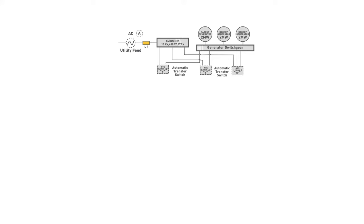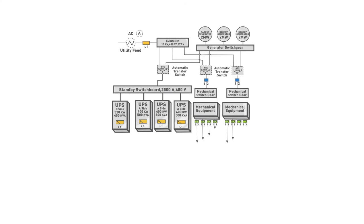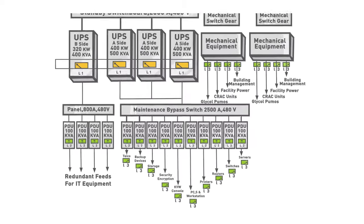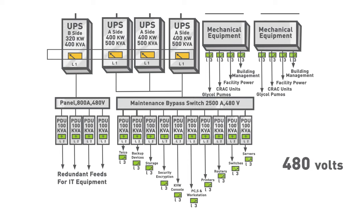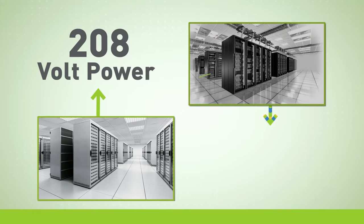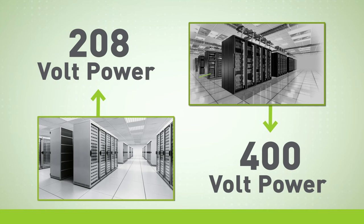The power from the UPSs is usually wired to the power distribution units, frequently referred to as PDUs. Note that these very large PDUs are not the same as the rack PDUs we'll reference later. In these videos I'll refer to these large PDUs as floor PDUs to differentiate them from the rack PDUs. The floor PDUs transform the power from 480 volts down to either 400 or 208 volts. Older data centers were built with 208 volt power, whereas most new data centers are using 400 volt power.